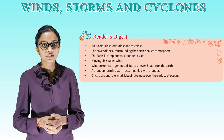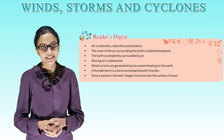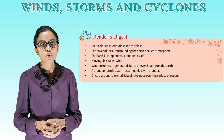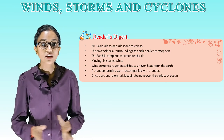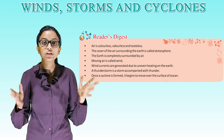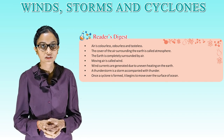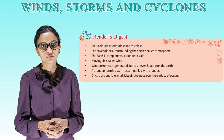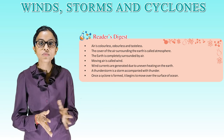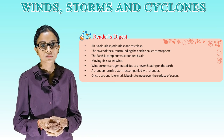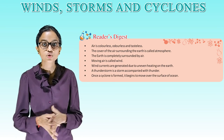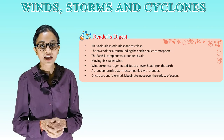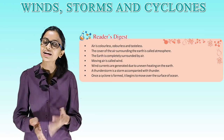Summary: Air is colourless, odorless and tasteless. The cover of air surrounding the earth is called atmosphere. The earth is completely surrounded by air. Moving air is called wind. Wind currents are generated due to uneven heating on the earth. A thunderstorm is a storm accompanied with thunder. Once a cyclone is formed, it begins to move over the surface of the ocean. So students, it's time to take your leave. Bye, we'll meet in the next class.